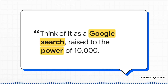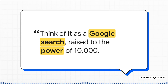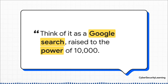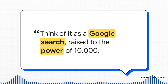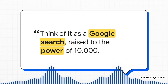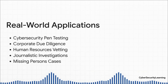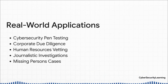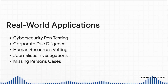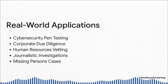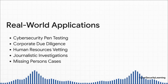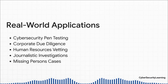When you Google your own name, you're just scratching the surface. OSINT analysts go way deeper — using special techniques to find things like that old forum post you made 10 years ago under a different username, or cached versions of websites you thought were gone forever. In cybersecurity, the good guys use OSINT to find weaknesses before the bad guys do. Corporations use it for due diligence, HR departments use it to check job candidates, journalists use it for deep-dive investigations, and it's even helped solve missing persons cases.